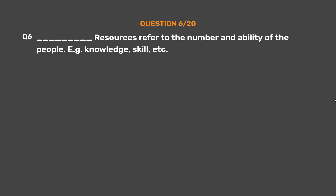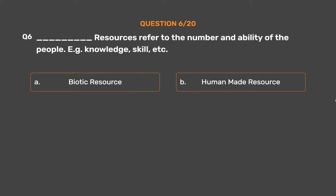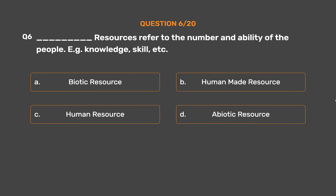Question number 6. ___ resources refer to the number and ability of the people — for example, knowledge, skill, etc. Option A: Biotic resource. Option B: Human-made resource. Option C: Human resource. Option D: Abiotic resource.